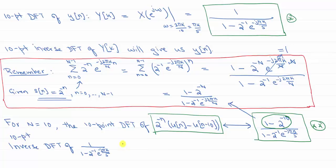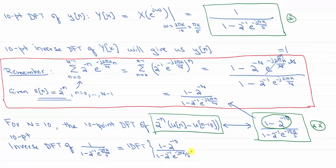To be clear, the inverse DFT of 1 over (1 minus 2 to the minus 1 times e to the minus j pi K over 5) equals the inverse DFT of (1 minus 2 to the minus 10) over (1 minus 2 to the minus 1 times e to the minus j pi K over 5), divided by (1 minus 2 to the minus 10). Since (1 minus 2 to the minus 10) is just a scalar, we can factor it out.